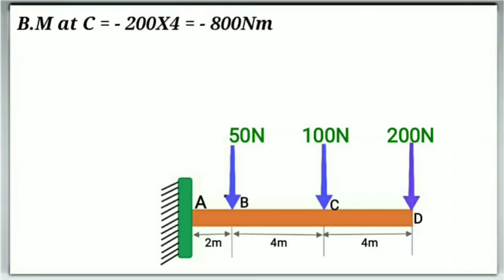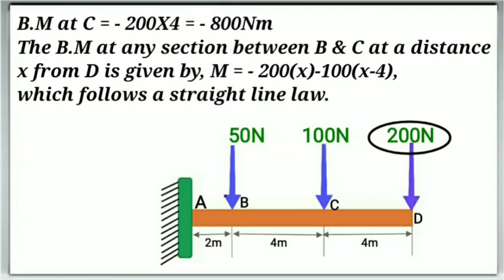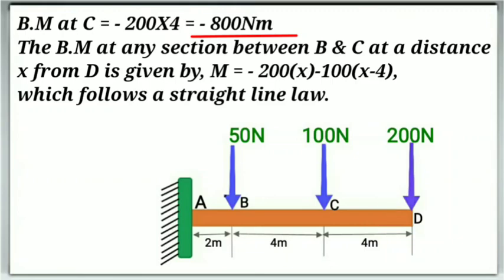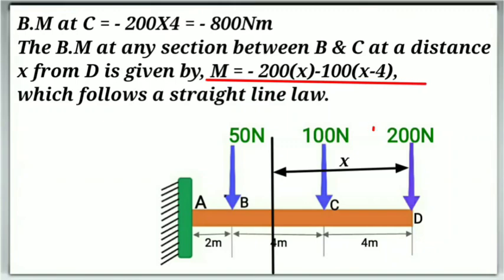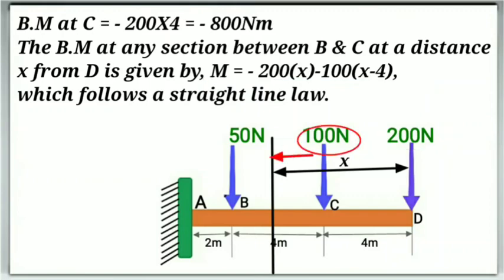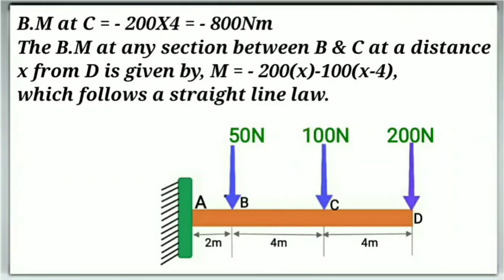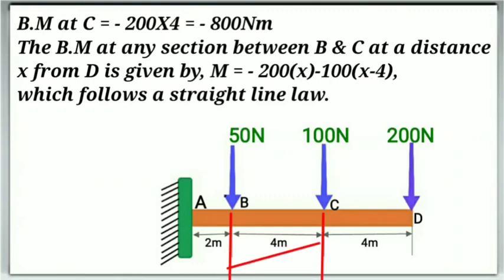The bending moment at point C is equal to minus 200 into 4, equal to minus 800 Nm. The bending moment at any section between B and C at a distance X from point D will be given by Mx equal to minus 200 into X minus 100 into (X minus 4), and the negative sign is because of the sign conventions of the bending moment diagram. This equation also follows the straight line rule, which clearly indicates that the bending moment diagram between point C and B will be a straight line but with a negative slope.